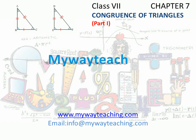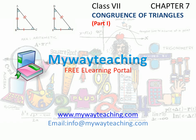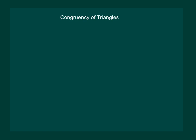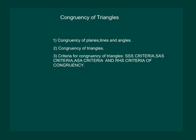Hello friends, this video is brought to you by MyWayTeaching.com. We shall now start with a very important geometrical idea of congruency. We shall start with the concept of congruency of planes, lines, and angles. Then we shall understand the concept of congruency of triangles and the correspondence. Then we shall move to the criteria for congruency of triangles: SSS criteria, SAS criteria, ASA criteria, and the RHS criteria for congruency.